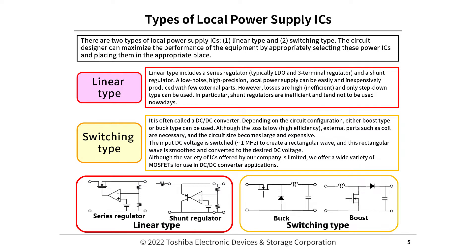There are two types of local power supply ICs: (1) linear type and (2) switching type. The circuit designer can maximize the performance of the equipment by appropriately selecting and placing these power ICs. The linear type includes a series regulator (typically LDO and three-terminal regulator) and a shunt regulator. A low noise, high precision local power supply can be easily and inexpensively produced with few external parts; however, losses are high, efficiency is low, and only step-down type can be used.